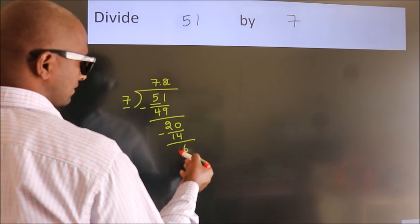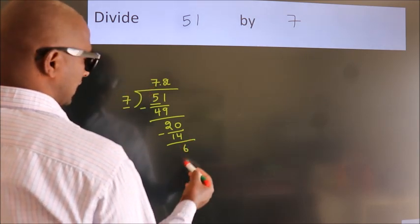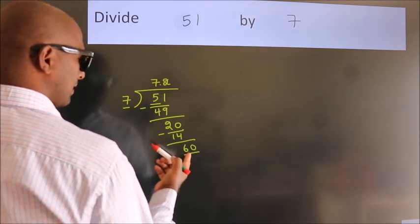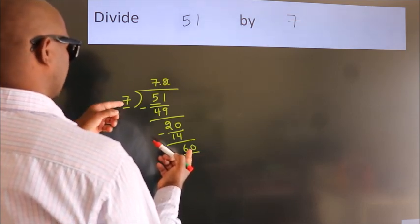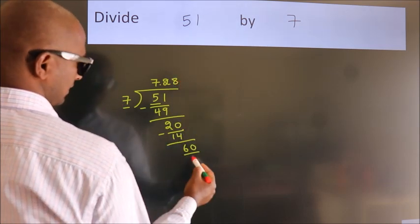After this, we already have the decimal. So directly take 0. So 60. A number close to 60 in 7 table is 7 eights 56.